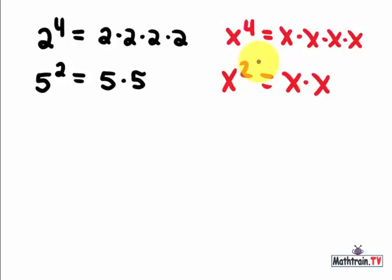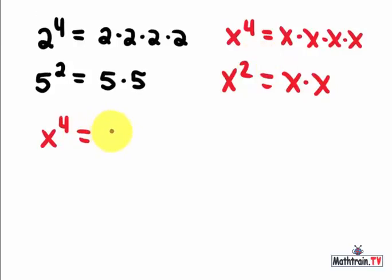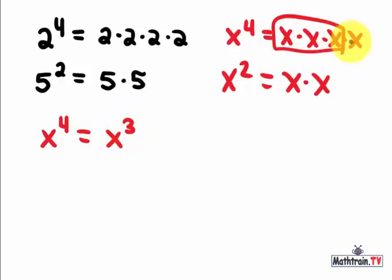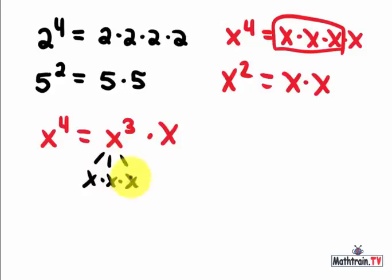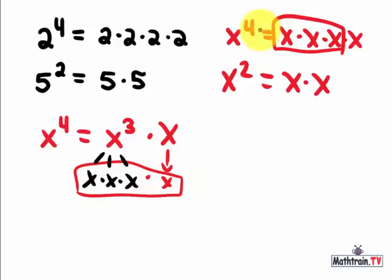We could even rewrite x to the fourth another way. I could actually write that as x times x times x, which is x cubed, times another x. Because after all, x cubed is x times x times x, and then times another x — that's our x times x times x times x, which is x to the fourth. It's the same thing.